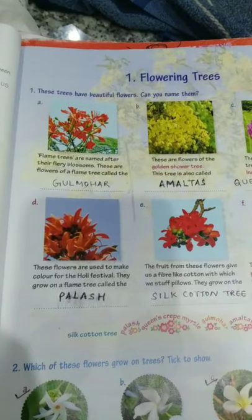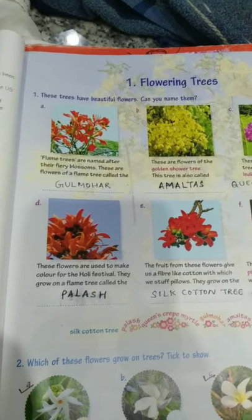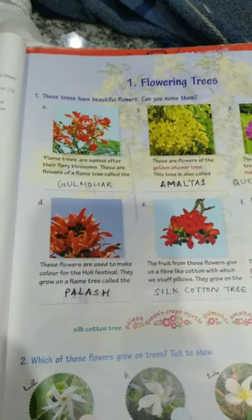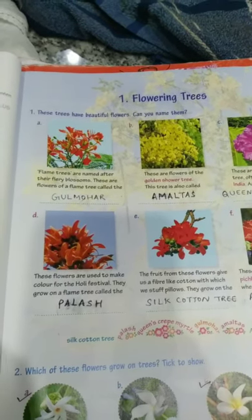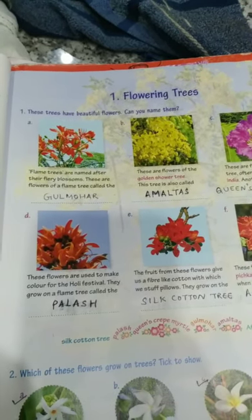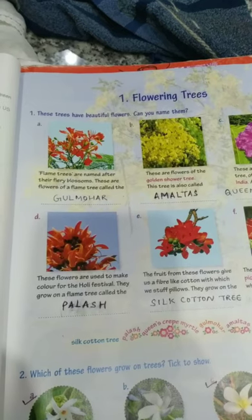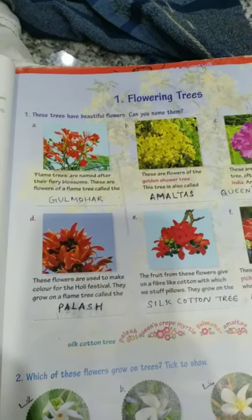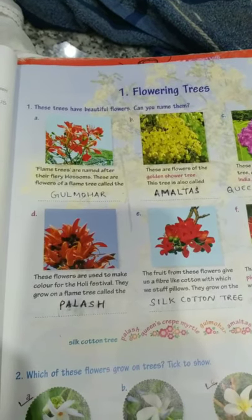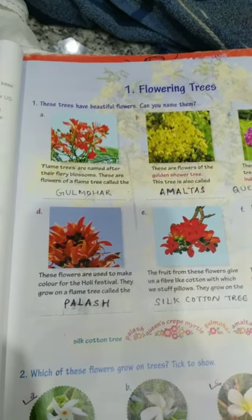Number 1: Flame trees are named after their fiery blossoms. These are flowers of a flame tree called the gulmohar. It is known as fiery blossoms because it looks just like fire. It is a tree with red or orange flowers. Compared to other trees, the wood of gulmohar tree is weak. It grows usually up to a height of 12 meters. So the answer is gulmohar — G-U-L-M-O-H-A-R.